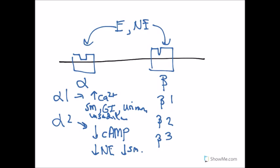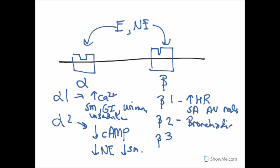Beta ones increase the heart rate because they're in the SA node and AV node of the heart. This is where beta blockers attack — beta adrenergic receptor blockers targeting beta ones specifically to lower the heart rate. Beta twos relax and dilate smooth muscles, so they're bronchodilators in the respiratory tract. Beta three is found in fat or adipose and increases fat breakdown, called lipolysis.